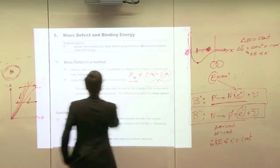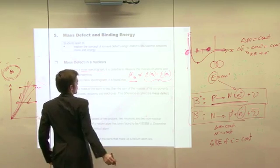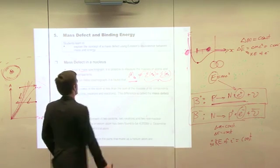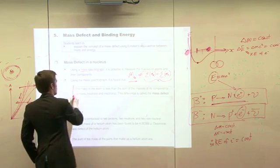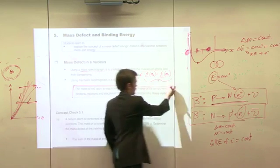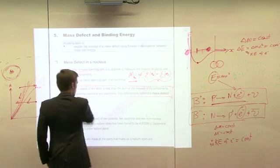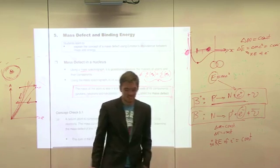So using a mass spectrograph, we can measure the masses of atoms and their components. Using the mass spectrograph, we've found that this is important. The difference is called the mass defect.